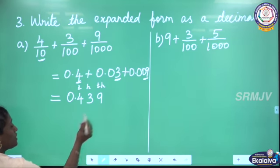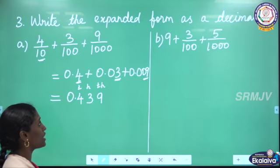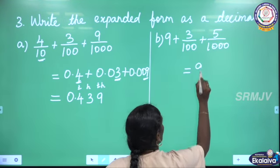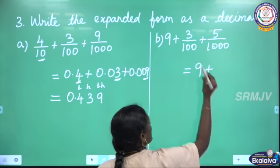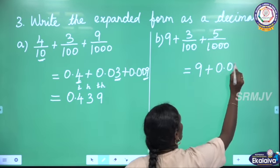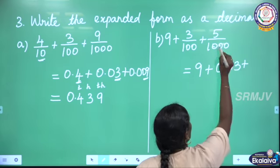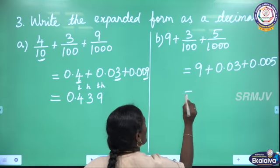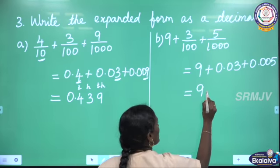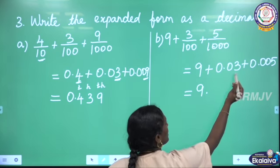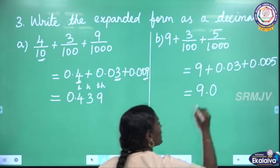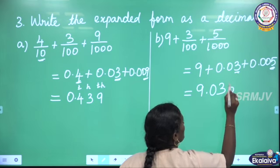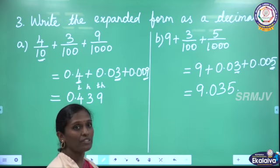So 0.439 is the required decimal number. See the next one: 9 plus 3 by 100 plus 5 by 1000. 9 is the whole number. For 3 hundredths, the decimal number is 0.03, and for 5 thousandths, 0.005. The whole number part is 9. There is no 10th place value, so we put 0 there. Then 3 is in the 100th place and 5 is in the 1000th place. So 9.035 is the answer.